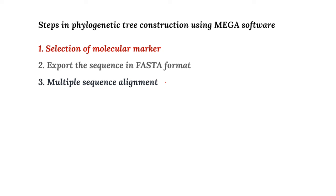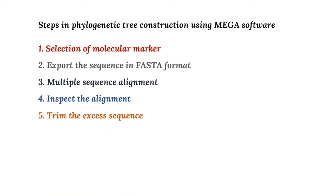After converting the sequence to FASTA format, you do multiple sequence alignment. Multiple sequence alignment is necessary — like arranging a body into head, body, and leg parts. It arranges sequences into sequential base space. After multiple sequence alignment, inspect the alignment: if there are gaps, unwanted sequences, or unaligned sequences, remove and trim those non-aligned sequences.